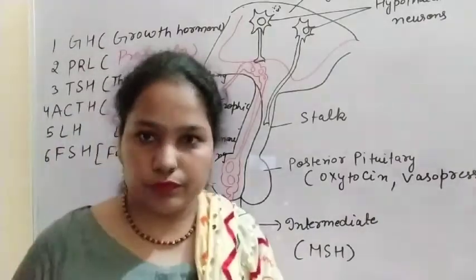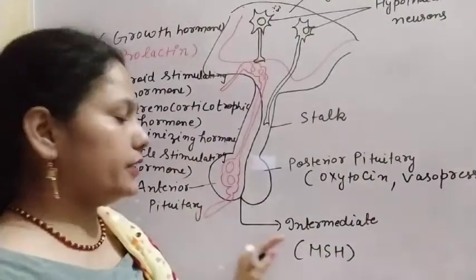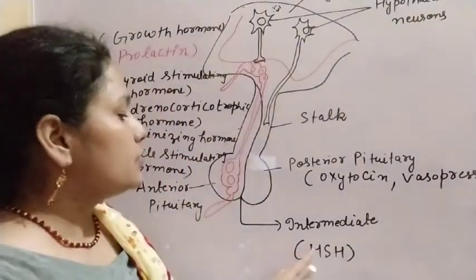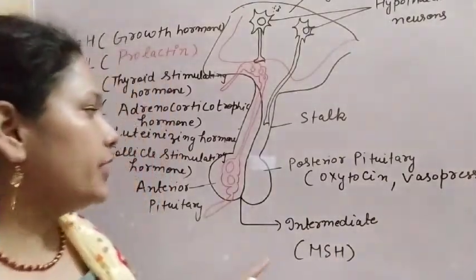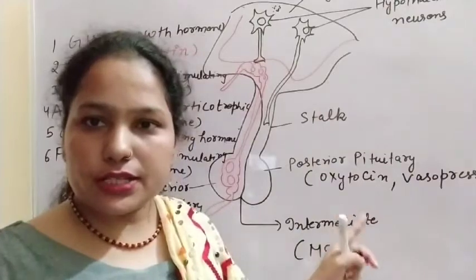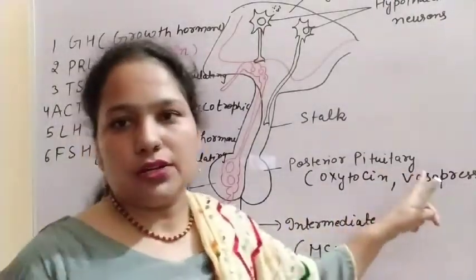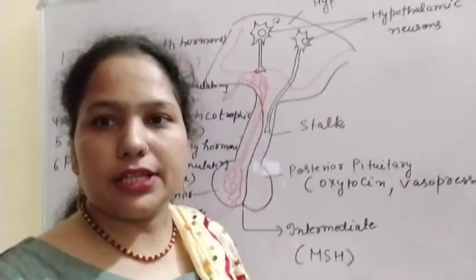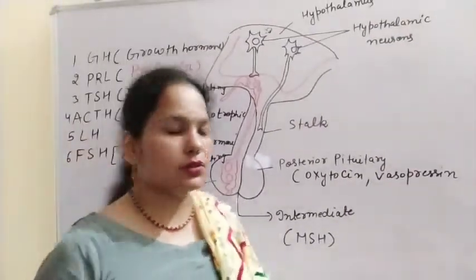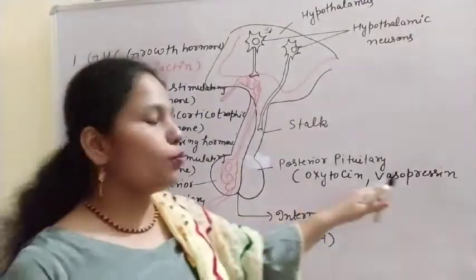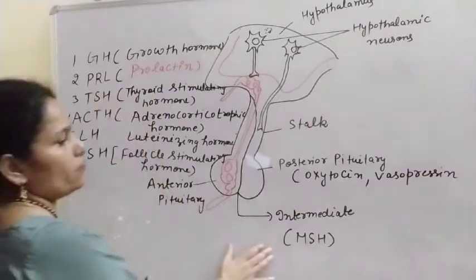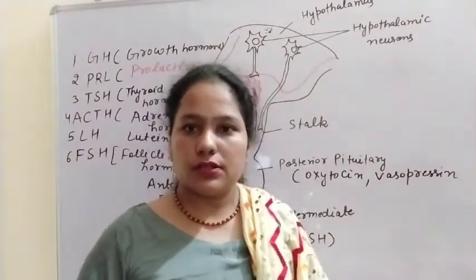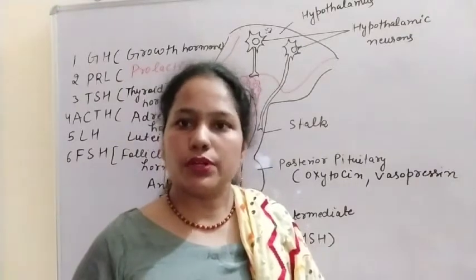The intermediate pituitary secretes only one hormone: melanocyte stimulating hormone. The posterior pituitary releases two hormones: oxytocin and vasopressin. So in total, nine hormones are released by the pituitary — six by the anterior pituitary, one by the intermediate pituitary, and two by the posterior pituitary.